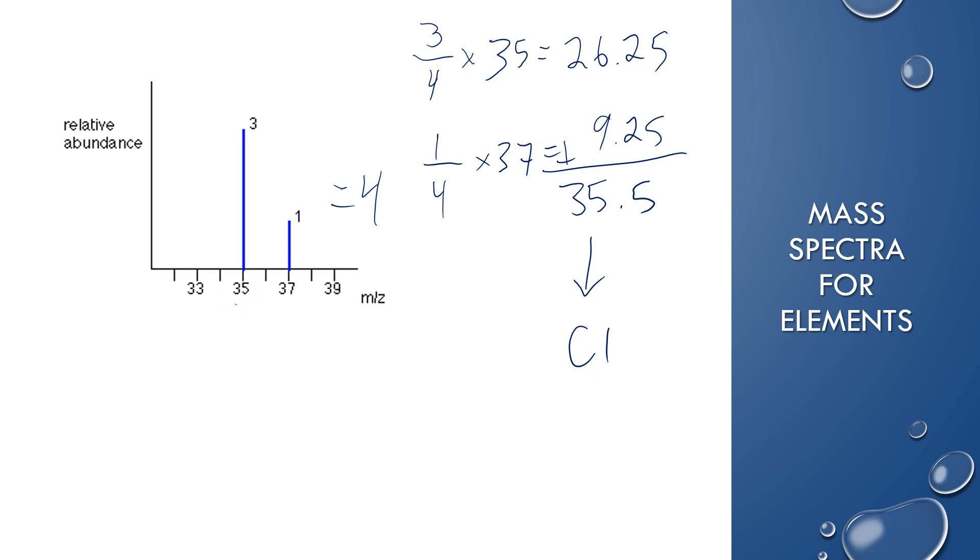You'll always be able to figure out what element it is based off of the graph that they give you. They'll give you idealized graphs like this. So yeah, you add together, find the total, take the fraction times the mass and then add together your answers.